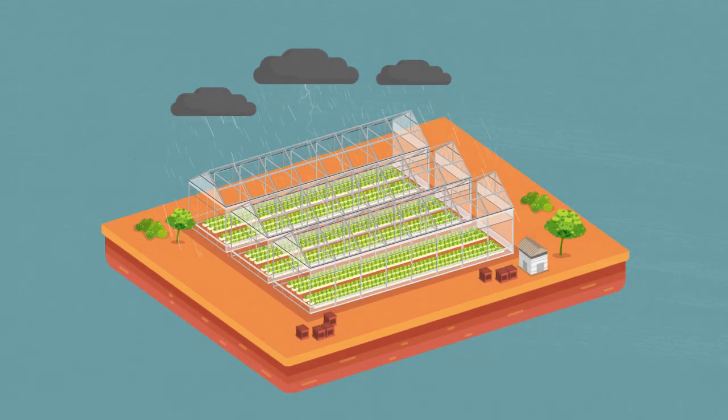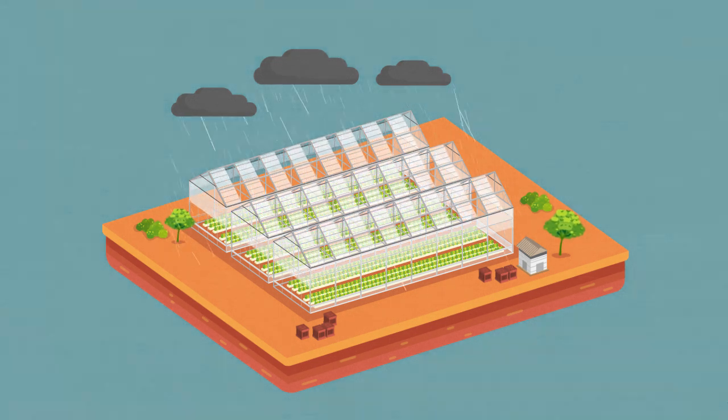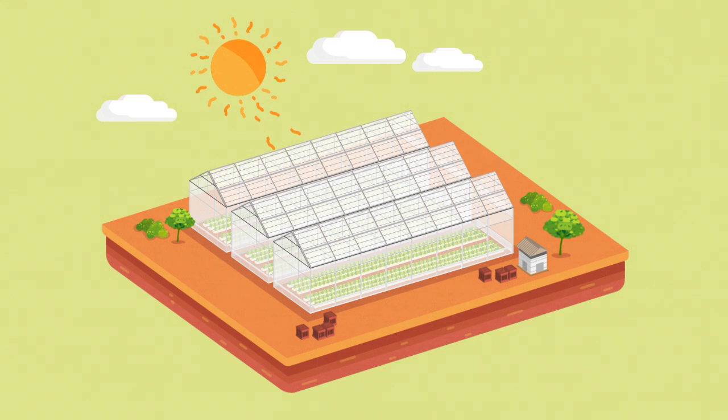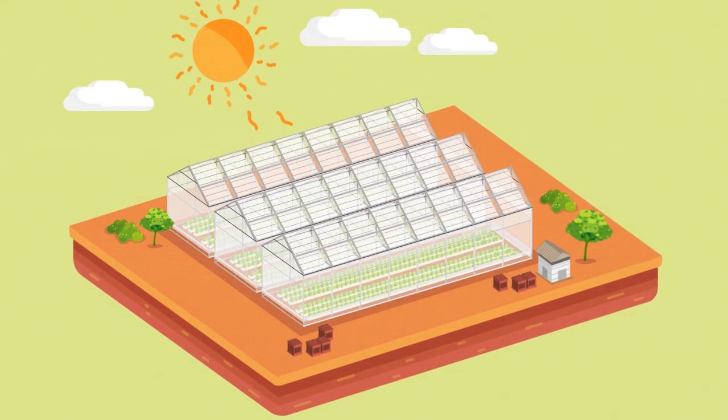When cold rain or hail comes, the roof will automatically close to protect the plants. And when there is high summer heat, the roof closes 80% to protect the plants from direct sun while also allowing for ventilation and cooling.